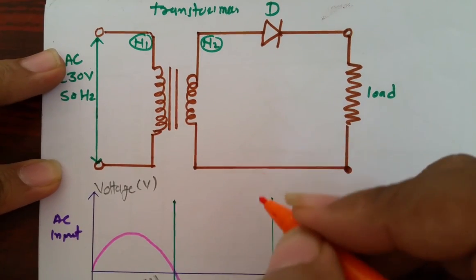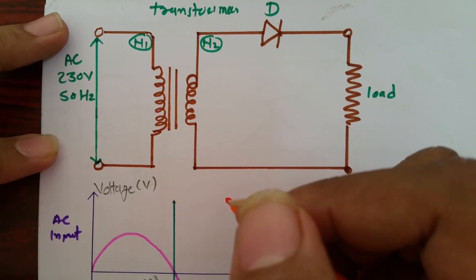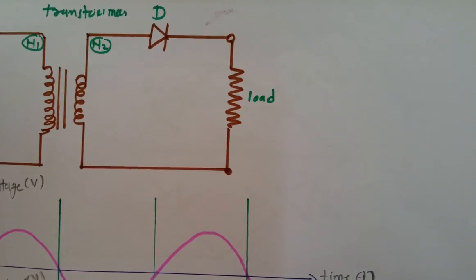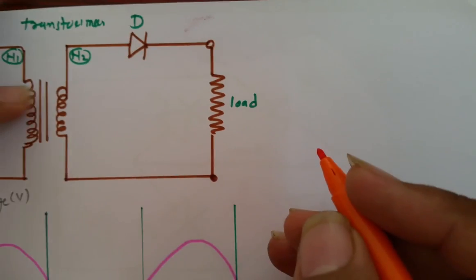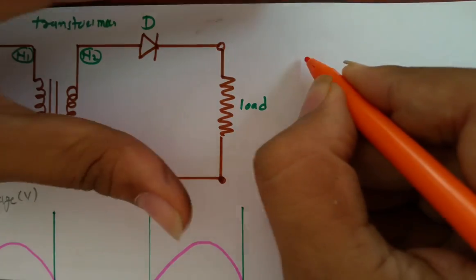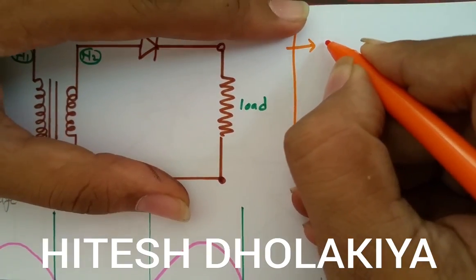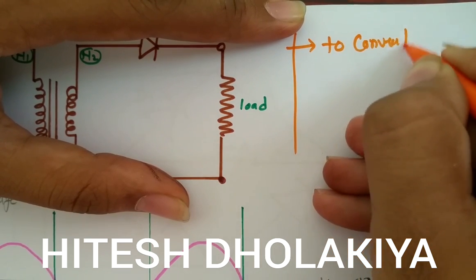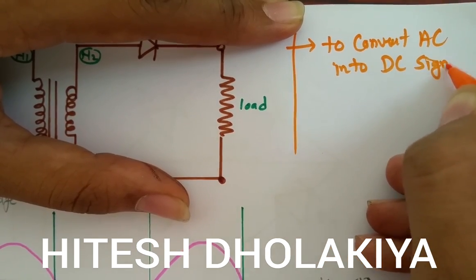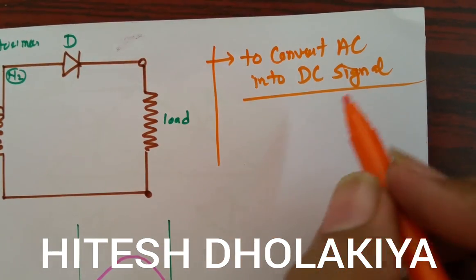Today I am going to explain rectifier and different types of rectifier, and after rectifier I will explain what is the function of filter. The basic principle of rectification is to convert AC into DC signal. That is the basic purpose which we need to fulfill by using a rectifier circuit.